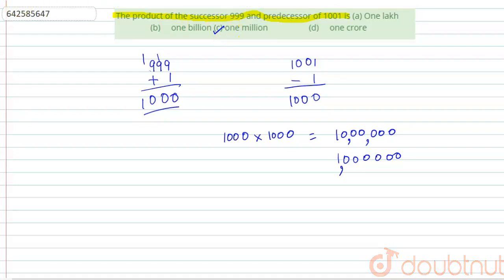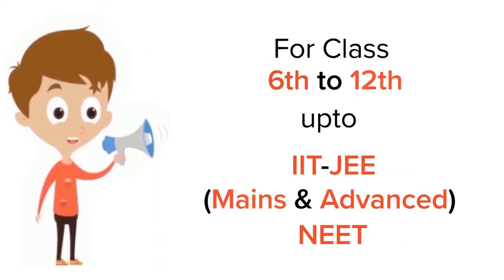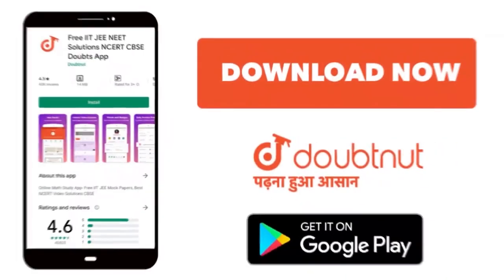So C is the correct option. I hope it is clear, thanks for watching. For class 6 to 12, IIT JEE and NEET level, trusted by more than 5 crore students, download Doubtnet app today.